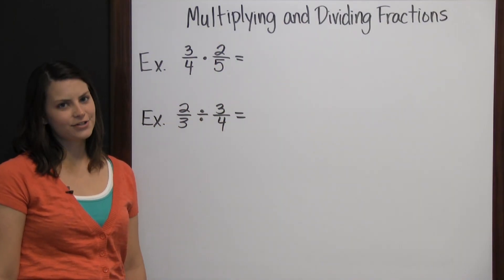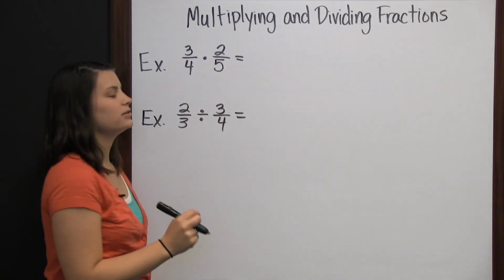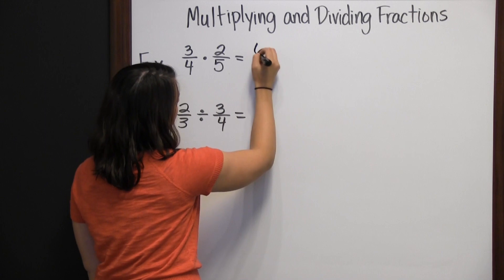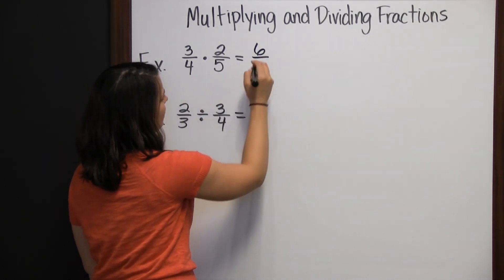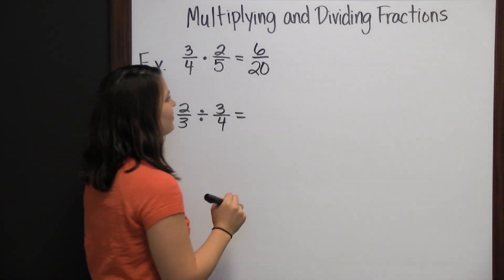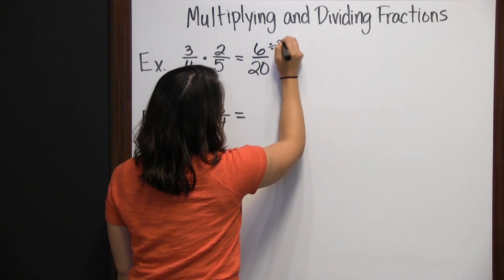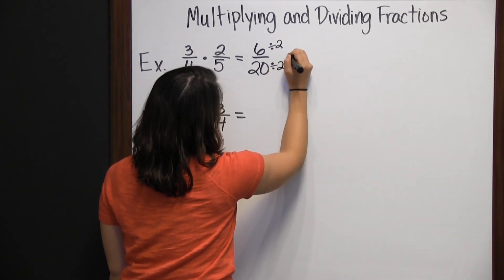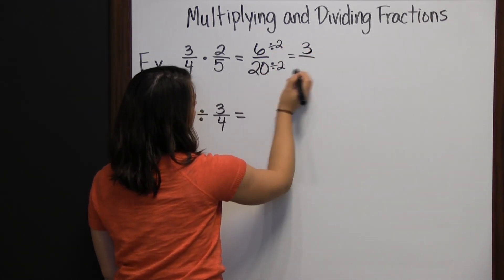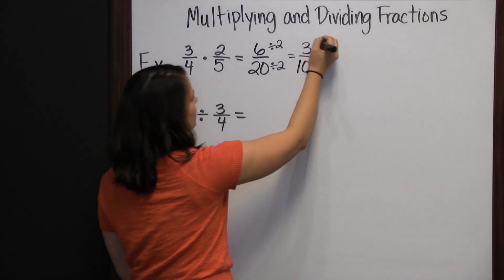Multiplying and dividing fractions. To multiply two fractions, simply multiply the numerators and multiply the denominators. 3 times 2 is 6, and 4 times 5 is 20. Then we can simplify. 6 and 20 are both divisible by 2. So divide numerator by 2: 6 divided by 2 is 3, and 20 divided by 2 is 10. So 3 fourths times 2 fifths is 3 tenths.